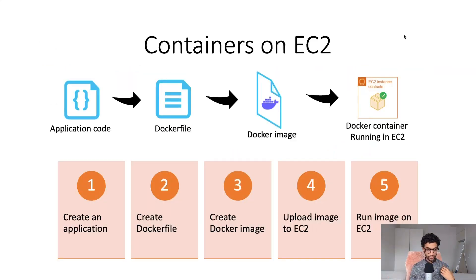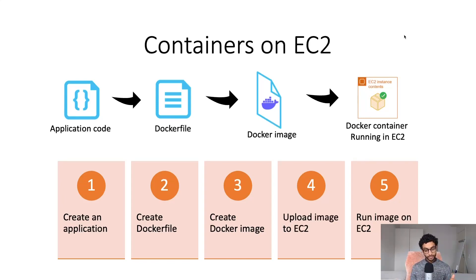So this is the workflow. You create an application — this could be a Python Django app or Flask app. After that you create a Dockerfile. A Dockerfile is simply a text document that lists the commands you would run in order to create a Docker image. It's much more convenient to have them stored in a text document. After that you create a Docker image, upload it to EC2, and run the image as a container.